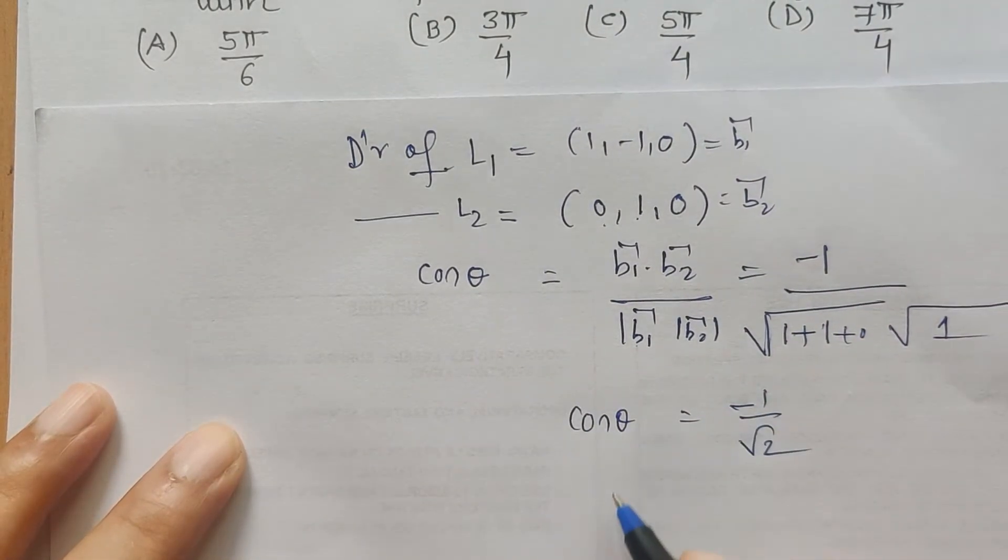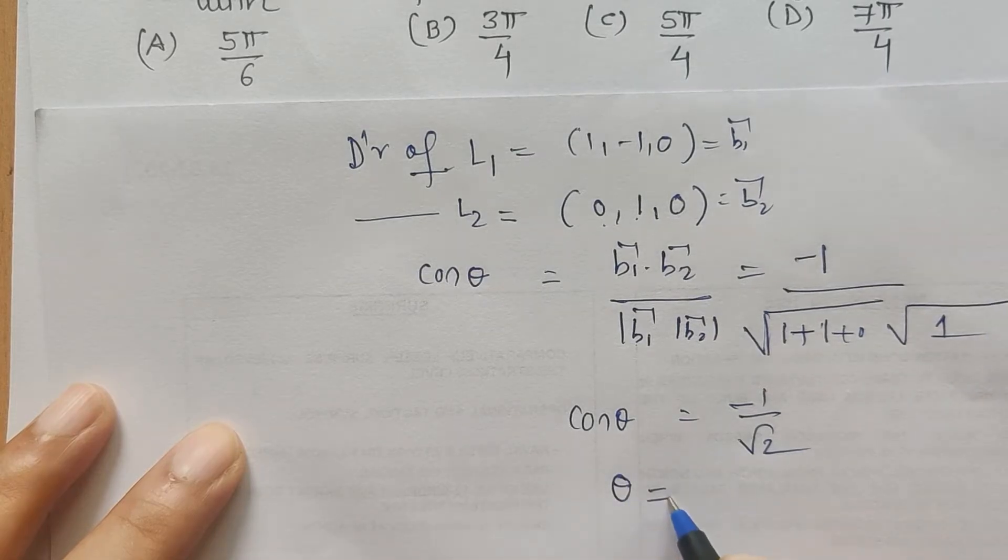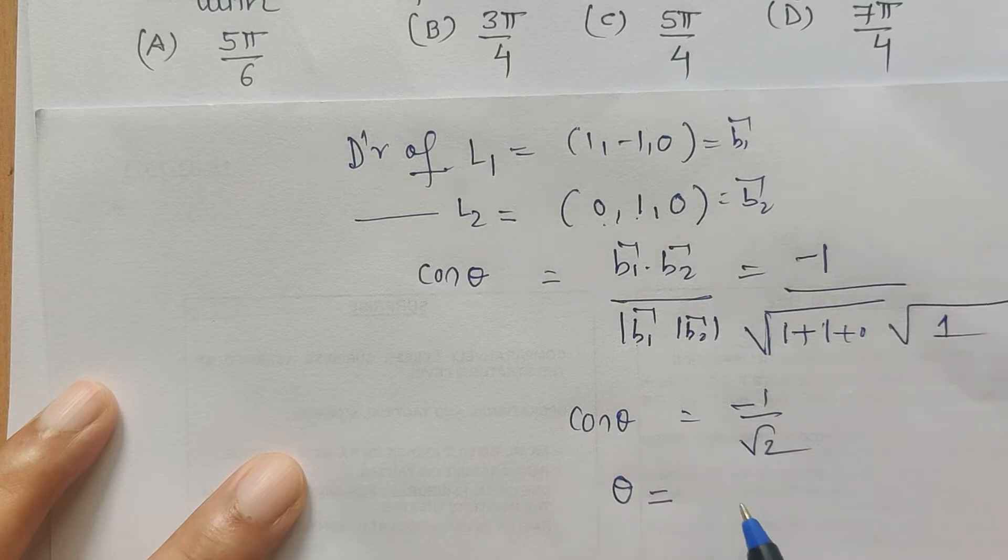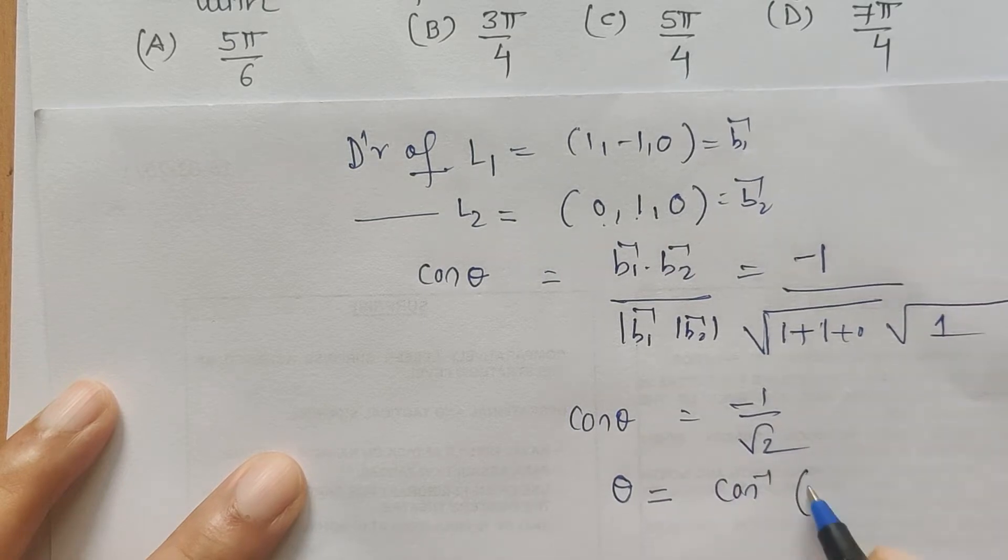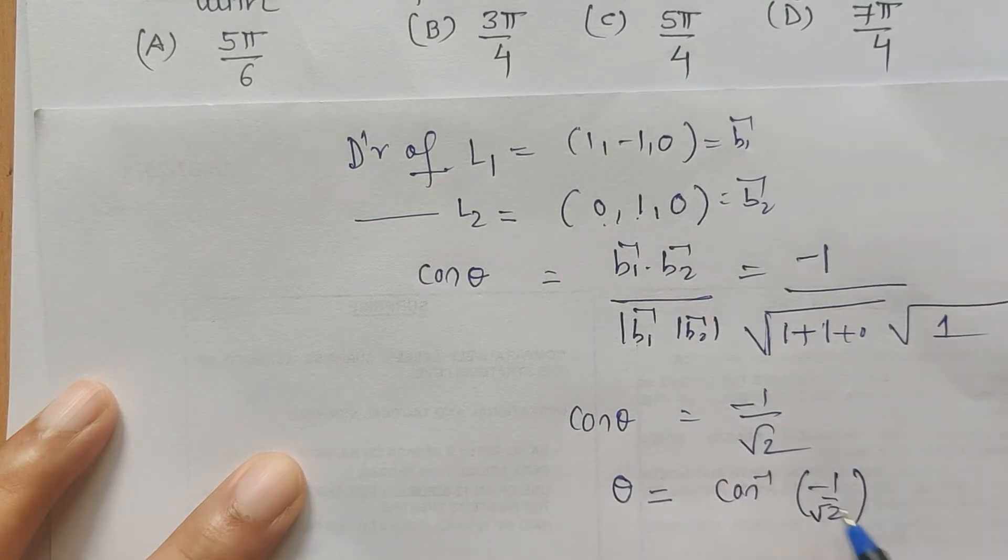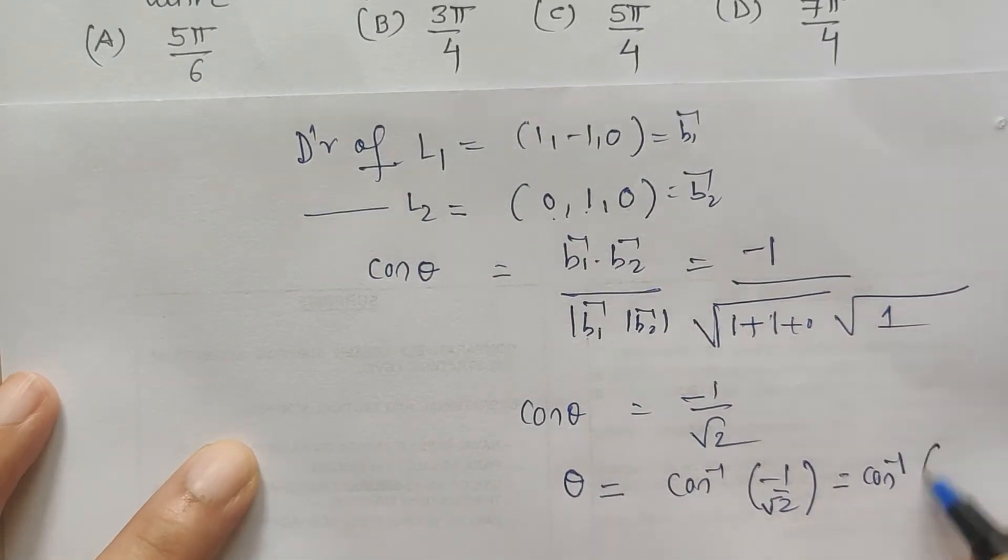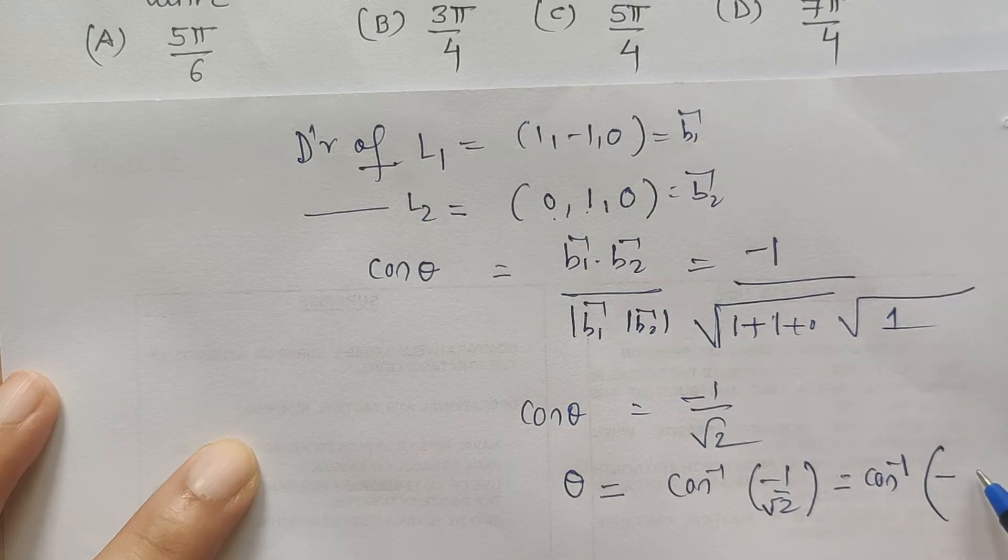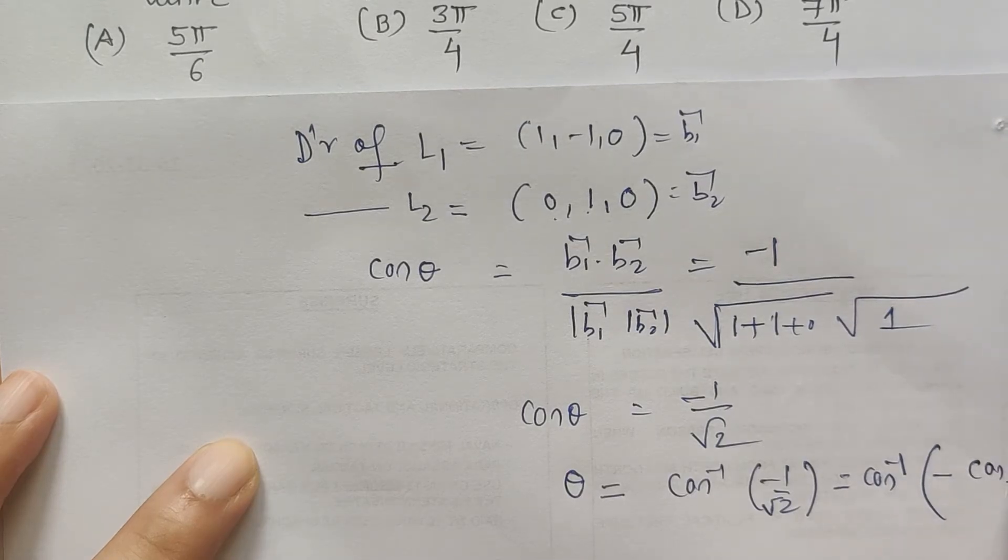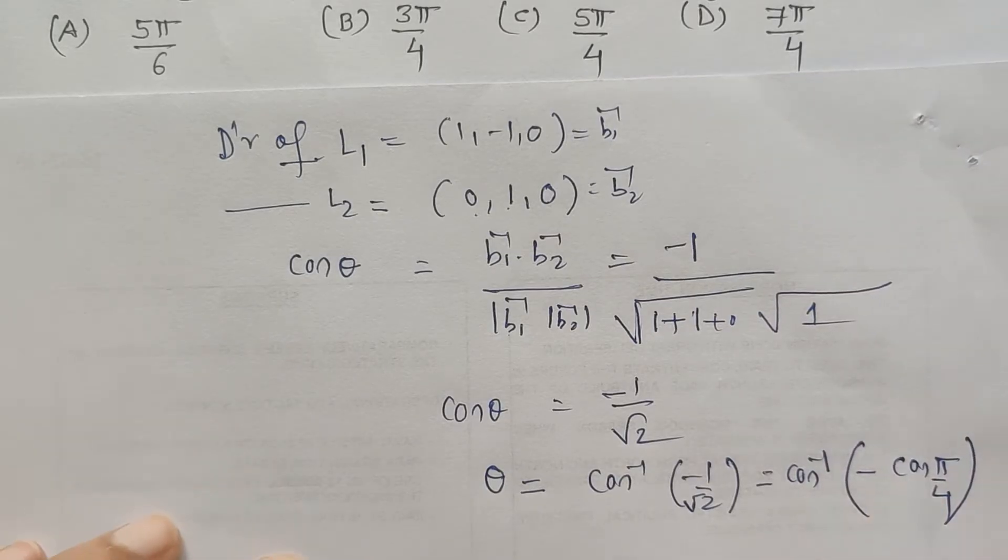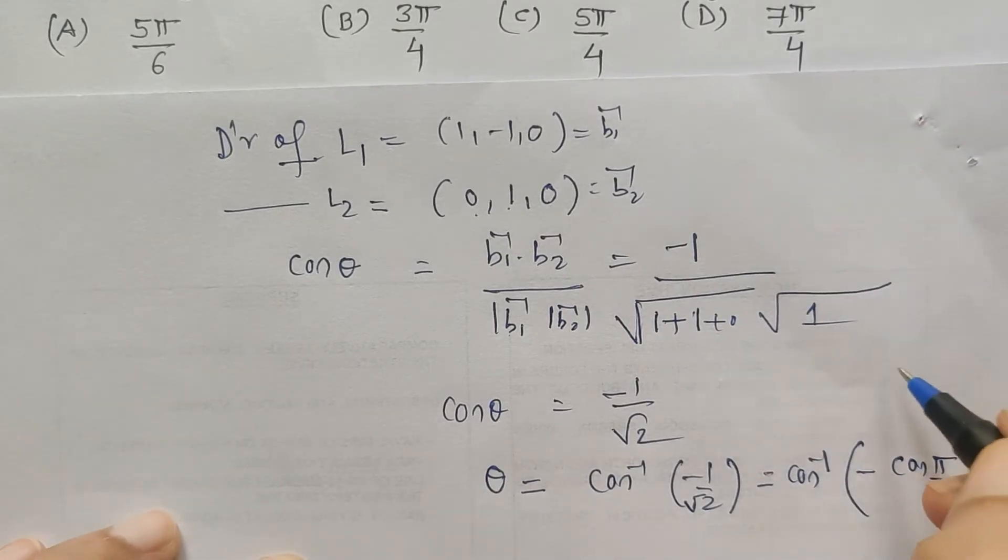Because here I am finding the angle which the given line makes with the positive direction of y-axis. So it is cos inverse of minus 1 by root 2. So this I have to calculate: cos inverse of, when do I get 1 by root 2 in cos? When it is π by 4, isn't it? Cos 45 is 1 by root 2.